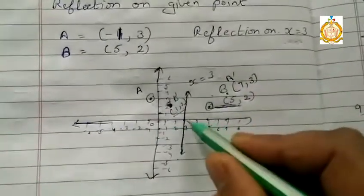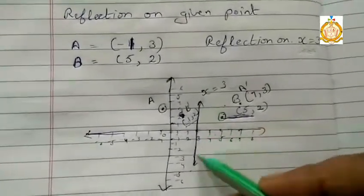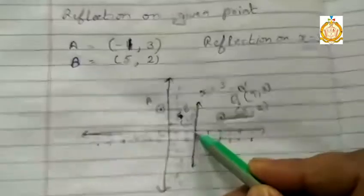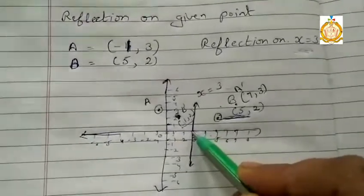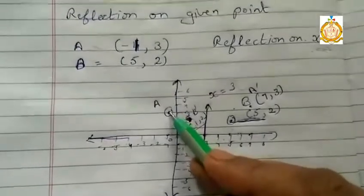Now x equals 3. This is x equals, y is not given. That means I will draw a straight line from x equals 3. Now given point is (-1, 3). x value is -1, y value is 3. Now this is my A point.